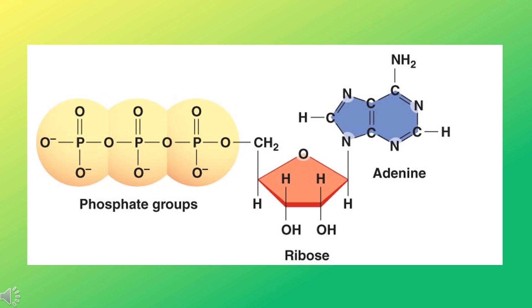ATP is made up of three main parts: an adenine, a ribose, and a 3-phosphate tail. Plants can synthesize ATP from the products of photosynthesis through a process called the Calvin cycle.